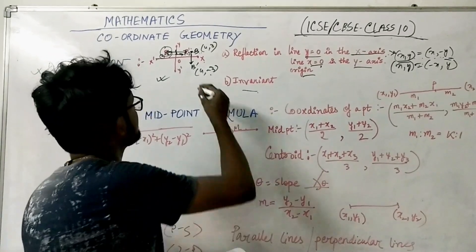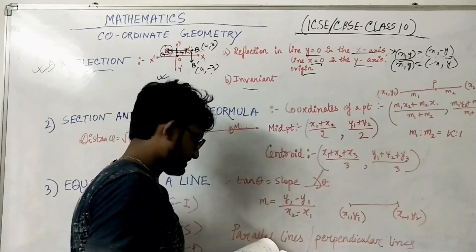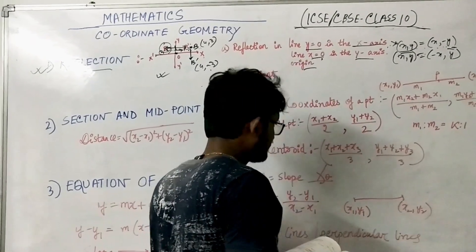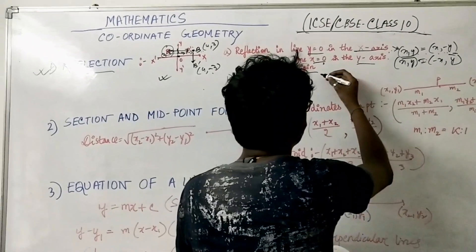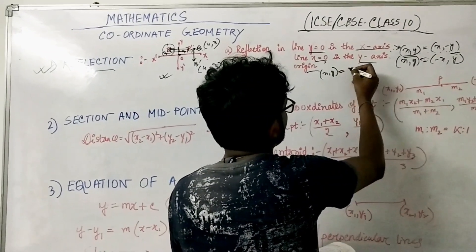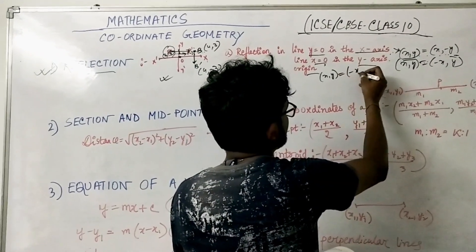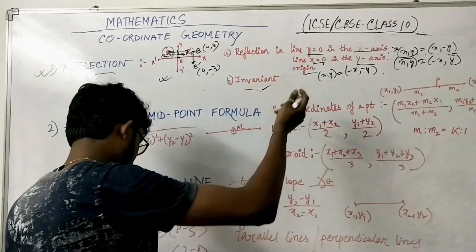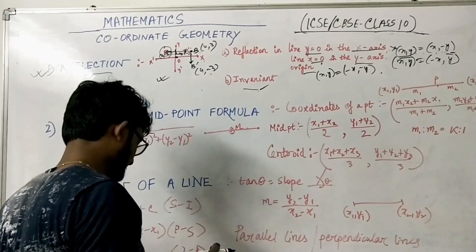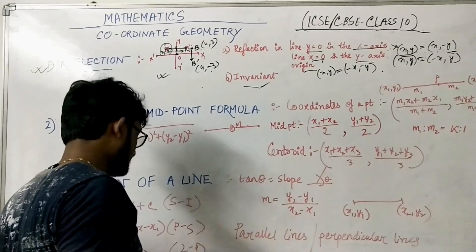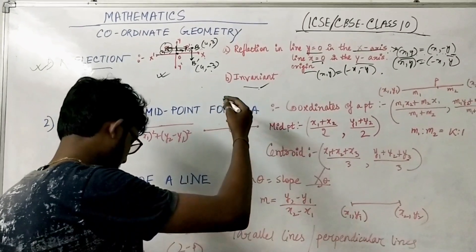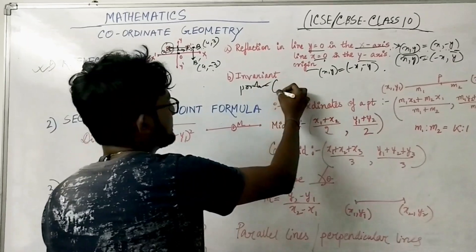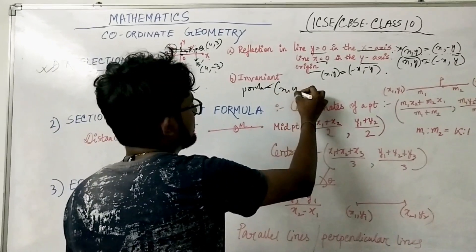For reflection in the origin, (x, y) becomes (-x, -y) — it's the reverse of both coordinates. An invariant point is a point that remains unaltered after transformation, meaning (x, y) remains (x, y).